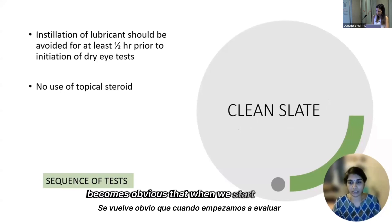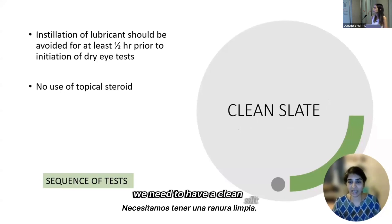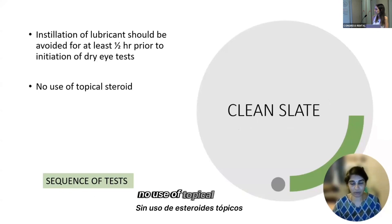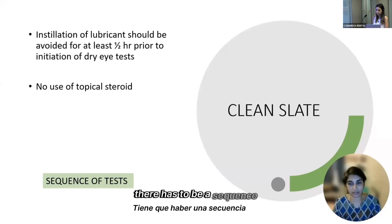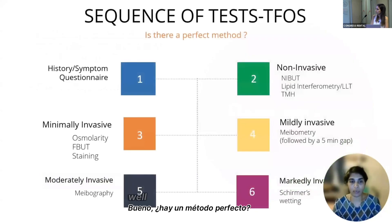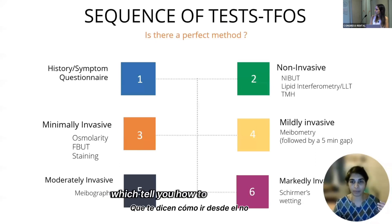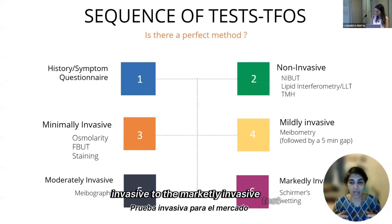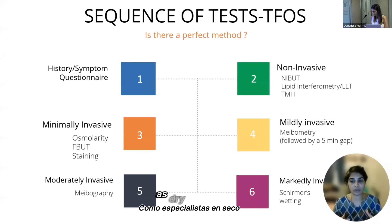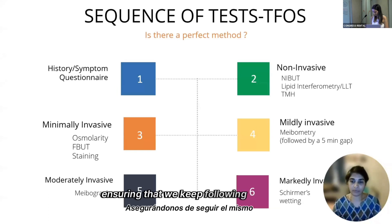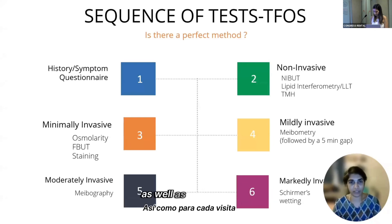When we start evaluating these patients, we need to have a clean slate — no lubricant for at least half an hour prior to initiation of dry eye tests, no use of topical steroids, and most importantly, there has to be a sequence for testing. There is no perfect method for sequence of testing, but there are several recommendations moving from non-invasive to markedly invasive tests. It is for each of us as dry eye specialists to follow a consistent sequence for every patient and every visit.